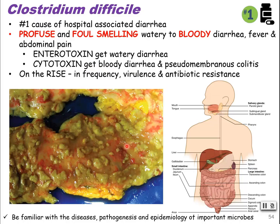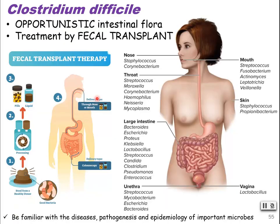They looked at this and thought it was like a membrane, so it's called pseudomembranous colitis when it gets invasive. It is on the rise in frequency and virulence. Also, antibiotic resistance — the people this thrives in were on broad-spectrum antibiotics. So it's opportunistic. It's part of the normal intestinal flora, and sometimes if it's antibiotic resistant, the person does not respond to therapy.